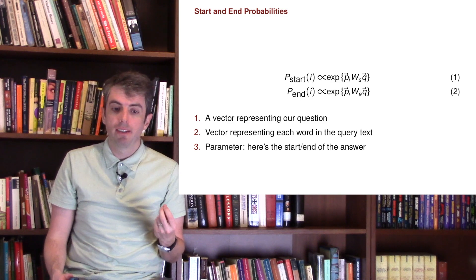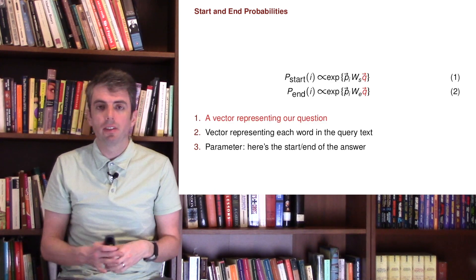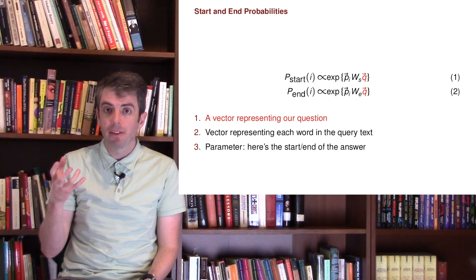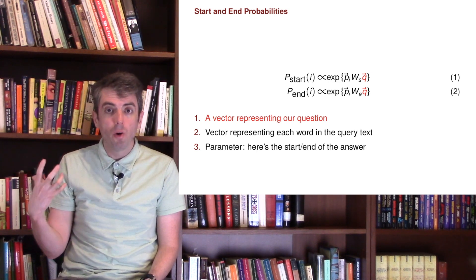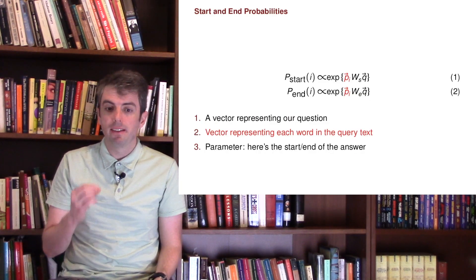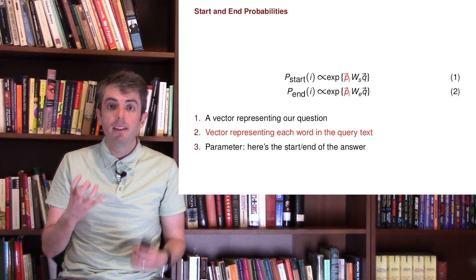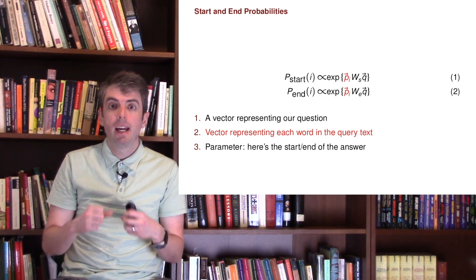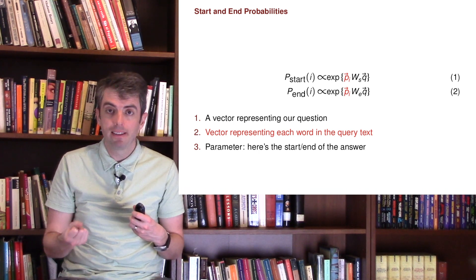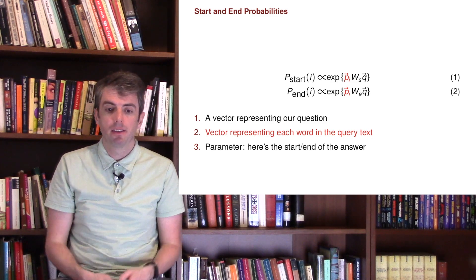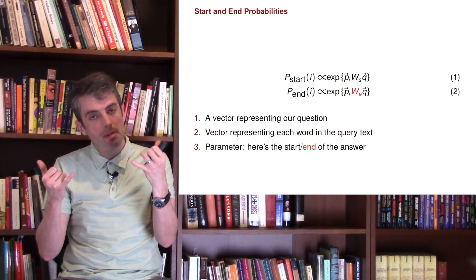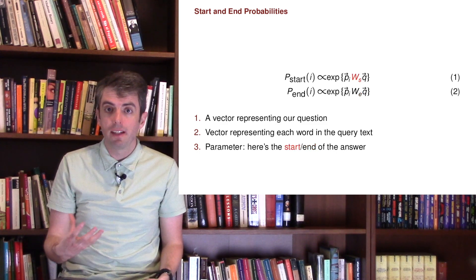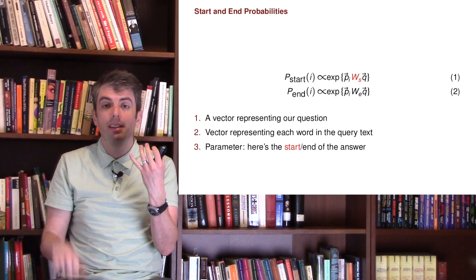So what gets fed into that decision to decide what words are the beginning and end of our answer? First, we have a vector that parametrizes the question. So as you're reading the passage looking for the answer, in the back of your brain you have 'what team represented the AFC in Super Bowl 50.' That's represented as a d-dimensional vector that encodes what the question is about. You also have a vector that represents every word in your passage - the results you got back from the information retrieval system. You need to highlight words in that passage, so you have a vector representing every word.